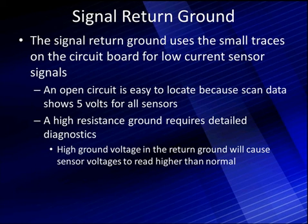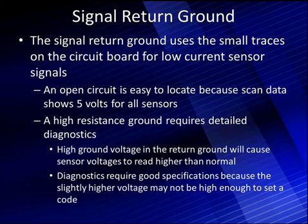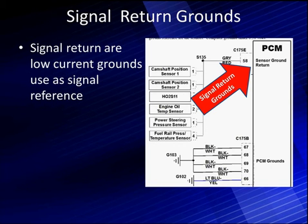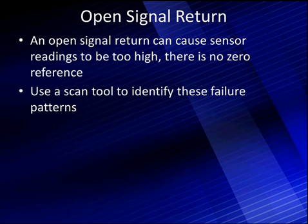Be careful of this — look for a zero starting spot. Diagnostics require good specifications because a slightly higher voltage may not be high enough to set a code. We've seen that a number of times with problems that didn't set a code because we had high grounds, but it wasn't quite high enough. You need good specifications. Power grounds carry high current switching — solenoids, injectors, coil-on-plug units — and they're usually bad connections. Signal returns are the small ones. Now you're seeing how they show up differently.